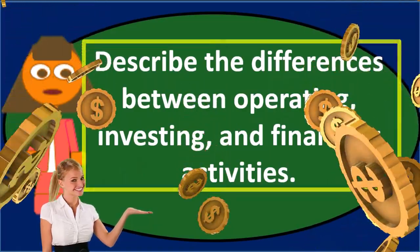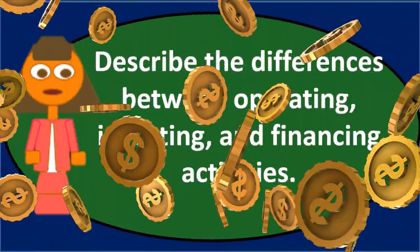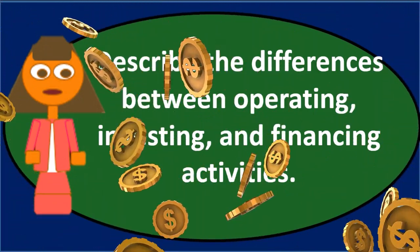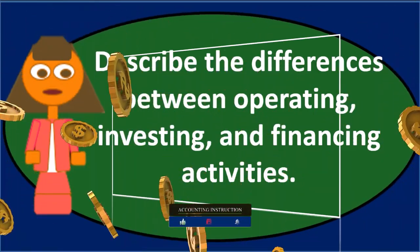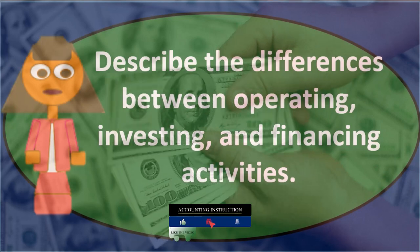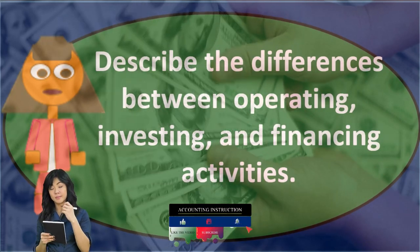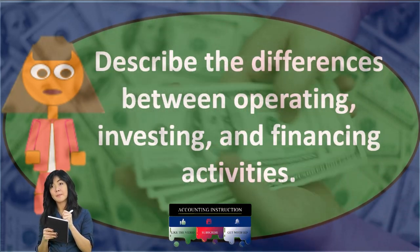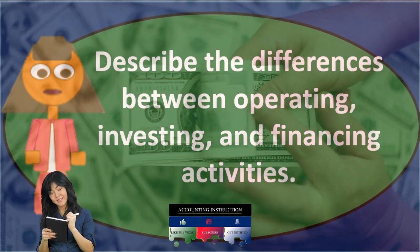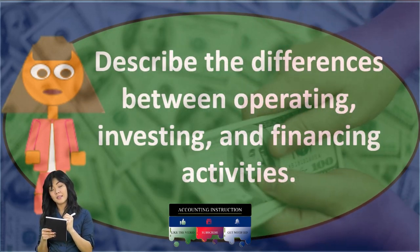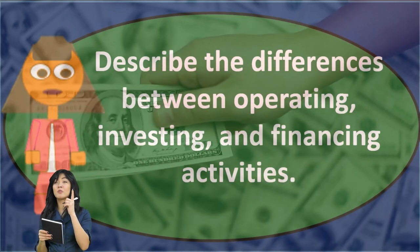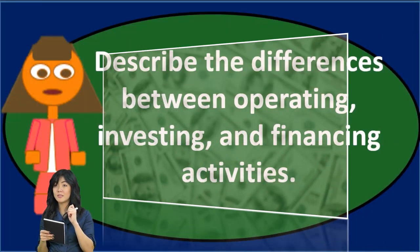It's basically a question about the statement of cash flows, and we may want to start by defining what the statement of cash flows is — what the operating, investing, and financing activities are in relation to the statement of cash flows — then go into those specific categories and possibly give some examples of what would be included in those categories.